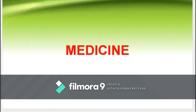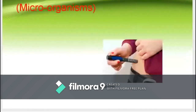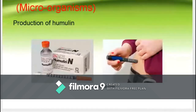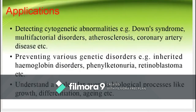In the field of medicine, DNA technology has been used for diagnosis and treatment of diseases, correction of genetic disorders, and manufacture of hormones and other pharmaceutical products such as vaccines. Genetically engineered microbes can be used to produce the antigens needed in a safe and controllable way. The use of genetically modified yeast to produce a vaccine against the hepatitis B virus has been a major success story. Another product is humulin, an intermediate-acting insulin that is slower to act and lasts longer than regular human insulin, used by diabetics.